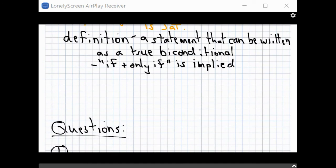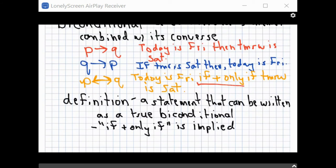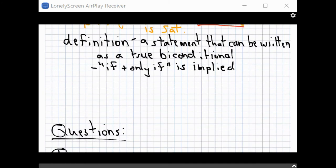Okay, so let's take a look at definition. A definition is a statement that can be written as a true biconditional. So in other words, a definition is where you define a word or you define a thing or a term. But a biconditional is an indication that you have a good definition. So, for example, going back to what we did up here, a fair definition of Saturday is the day that comes after Friday or a good definition of Friday is the day that comes before Saturday because no other thing falls into that category.